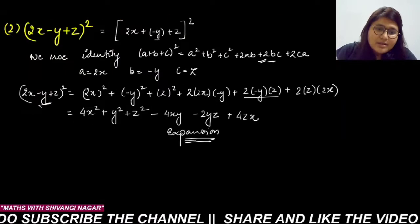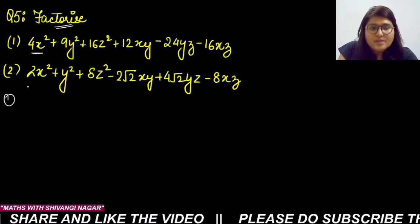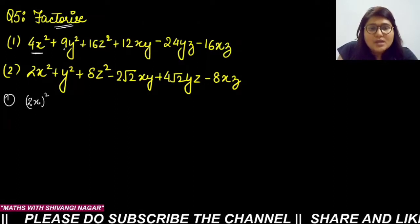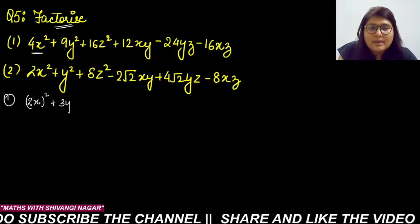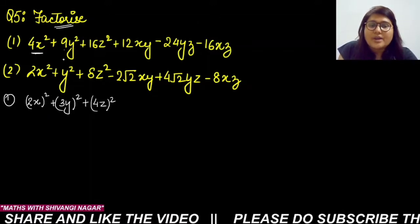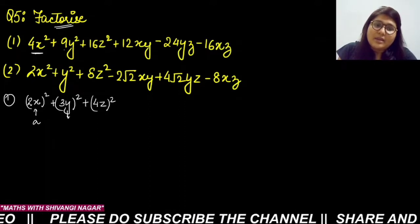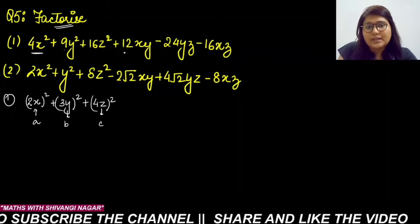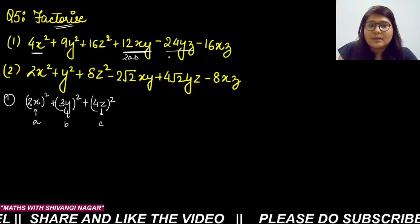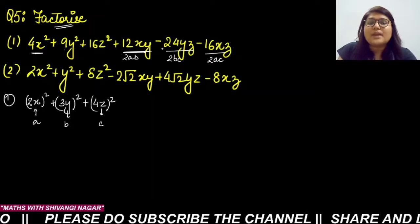Looking carefully at the given expression: 4x² can be written as (2x)², 9y² as (3y)², 16z² as (4z)². So these three are perfect square terms, meaning a = 2x, b = 3y, c = 4z — or possibly with a negative sign.